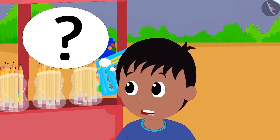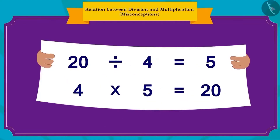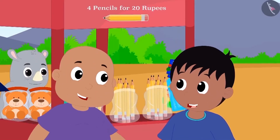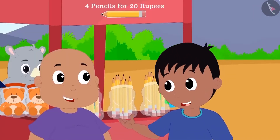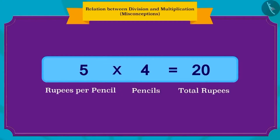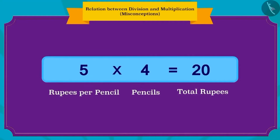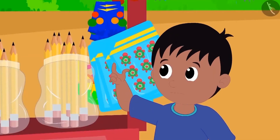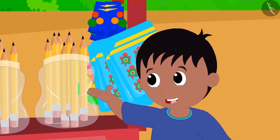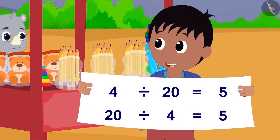Raju was amazed at how fast Bablu calculated the answer. Bablu wrote the division and multiplication equations for Raju, explaining he found the division answer by using multiplication. Raju got excited about the relation between division and multiplication. Raju said he can also write this multiplication the other way: 5 rupees per pencil times 4 pencils equals 20 rupees total. Raju also thought he could write division in two ways, and happily told Bablu he had become an expert in maths.